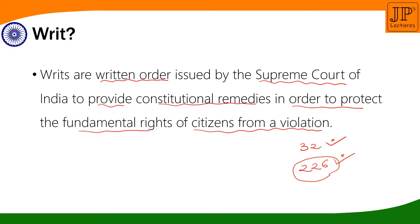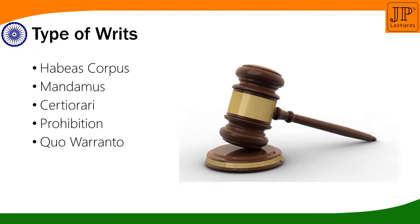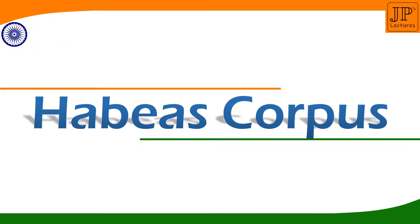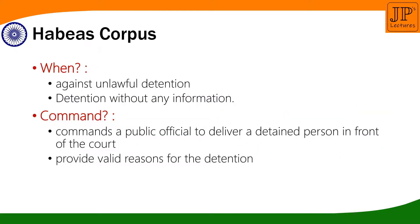There are five types of writs available under fundamental rights. The first writ is habeas corpus, the second is mandamus, the third is certiorari, the fourth is prohibition, and the fifth is quo warranto. Most of these words are Latin words. Habeas corpus means 'you shall have a body.' This writ is applied when there is any kind of unlawful detention or detention without information. It is enforced to protect the fundamental right of liberty of an individual against unlawful detention.